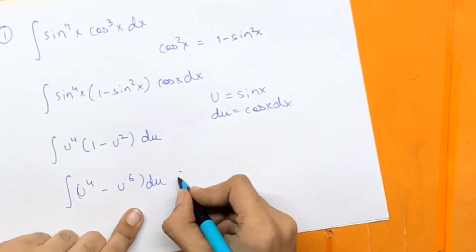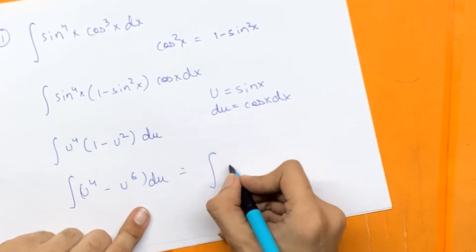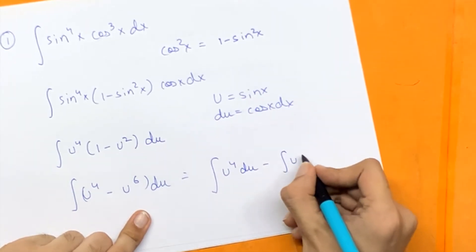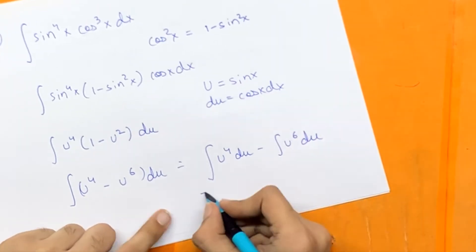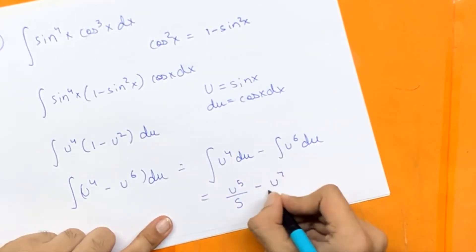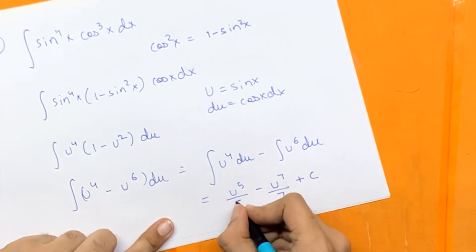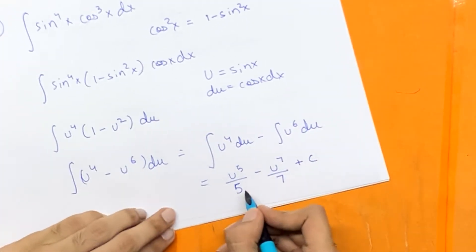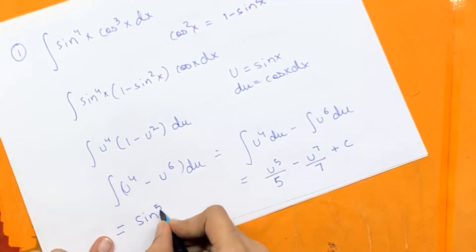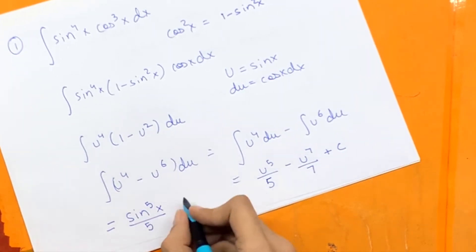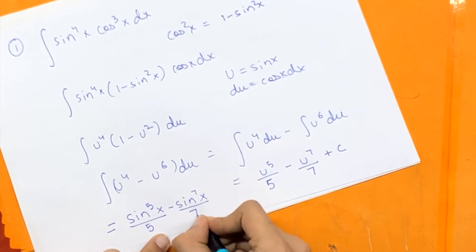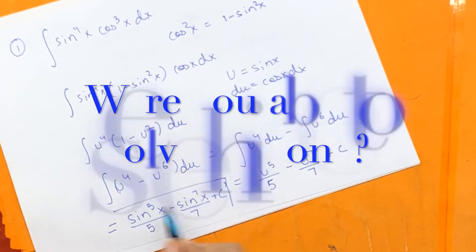We can break this down into two integrals: the integral of u to the power 4 du minus the integral of u to the power 6 du, which gives us u to the power 5 upon 5 minus u to the power 7 upon 7 plus c. Substituting u back in as sin x, we have sin to the power 5x upon 5 minus sin to the power 7x upon 7 plus c. And that is our answer for question number one.